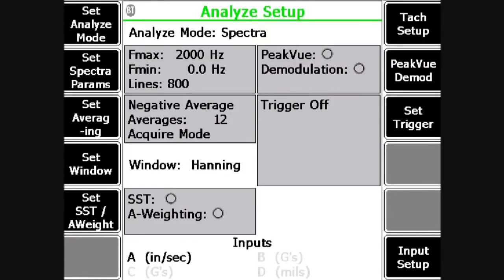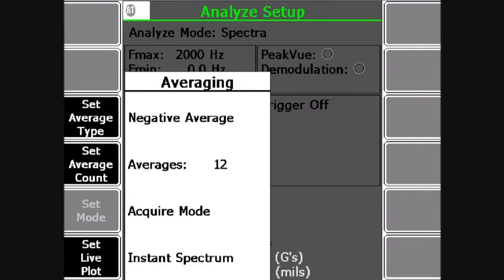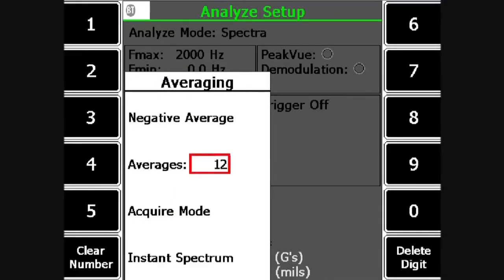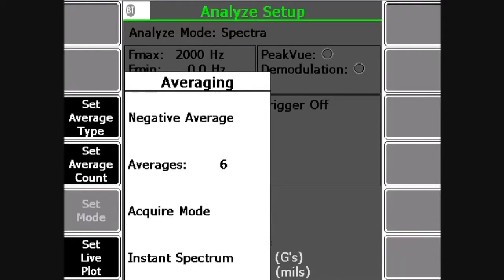Press enter. I've got 12 averages. I don't really need that many averages either, because I don't want to hit the machine that many times for this demo. I'm going to take it down to six averages. It's negative average mode. And I'm going to hit enter.